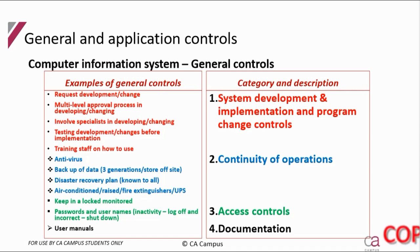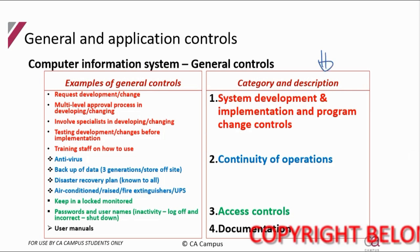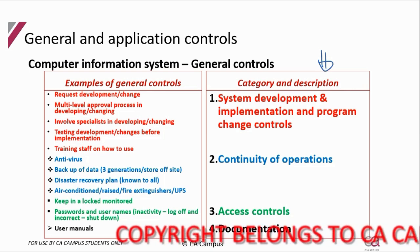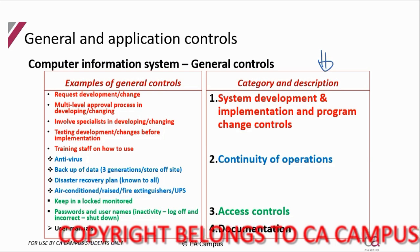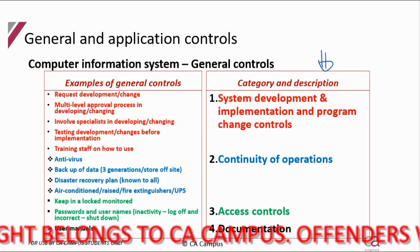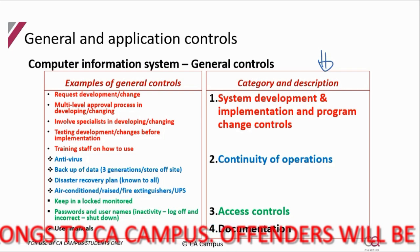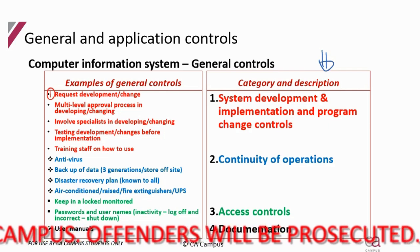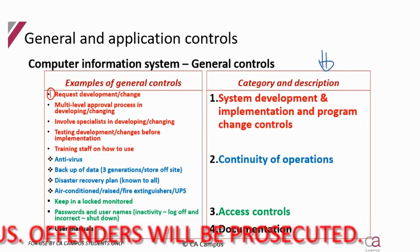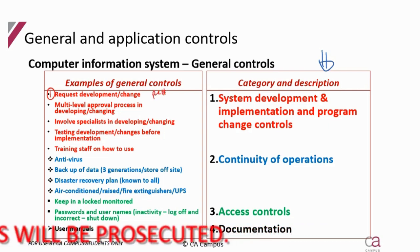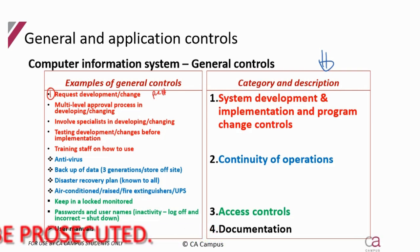Here you can see the categories as they are named on the right side, with the example of the general control we've just discussed. System development and implementation has been combined with program change controls because they both relate to developing or changing a system. The controls must include a request to develop a new system or make a change to the current system, and good source document design says that request must be printed and pre-numbered.